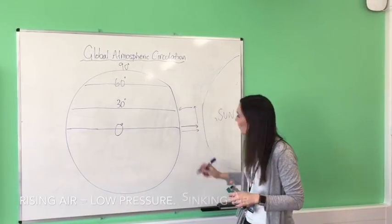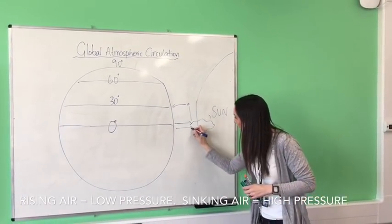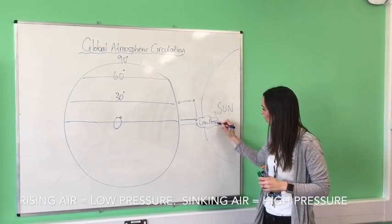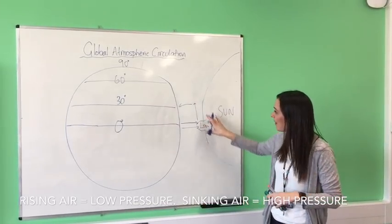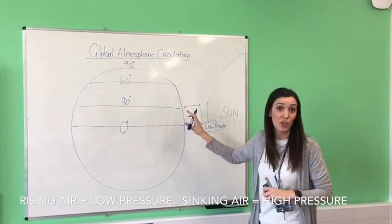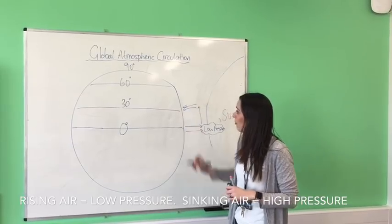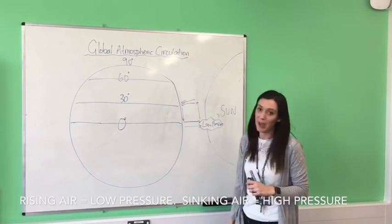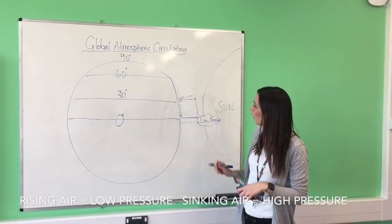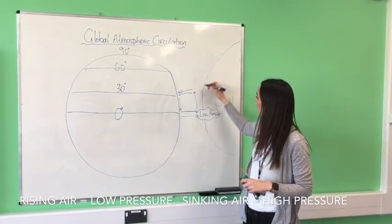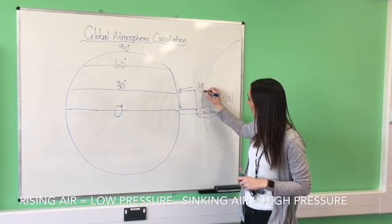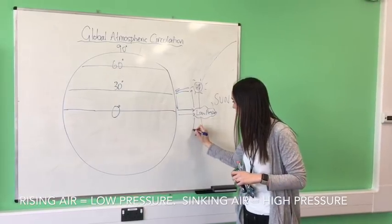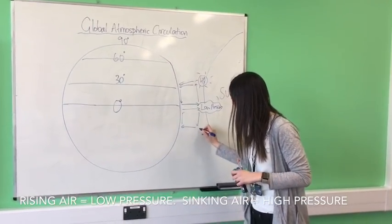This rising warm, unstable air at the equator creates low pressure, producing lots of rainfall there. At 30 degrees, the air starts to cool down and sinks back down to Earth, then travels back to the equator to warm up again. Where cooler air is sinking, that is where we get high pressure - so you get really sunny skies at 30 degrees north and south of the equator.